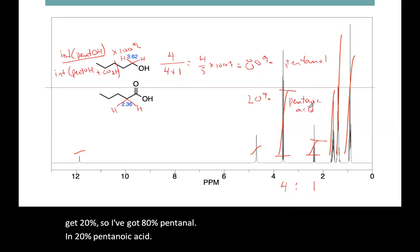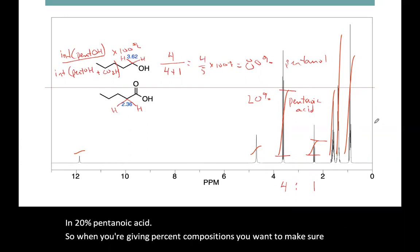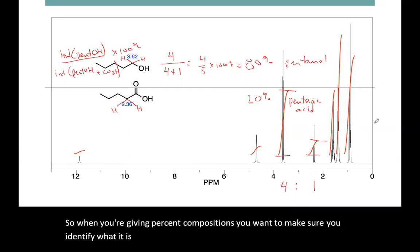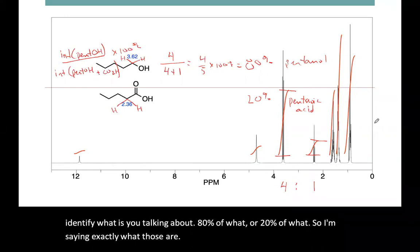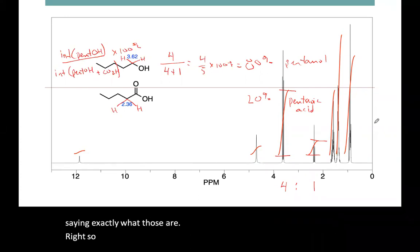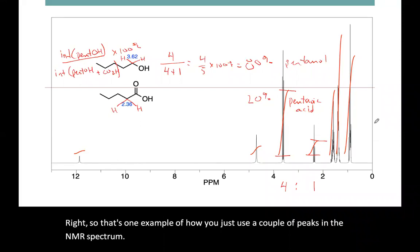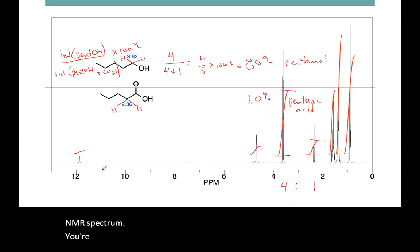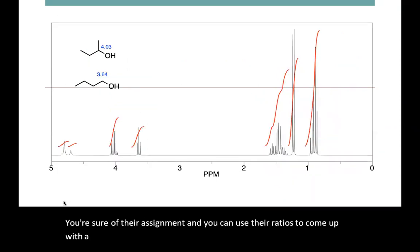So when you're giving percent compositions, you want to make sure you identify what it is you're talking about — 80% of what, or 20% of what — so I'm saying exactly what those are. That's one example of how we would just use a couple of peaks in the NMR spectrum. You're sure of their assignment, and you can use their ratios to come up with a percent composition.